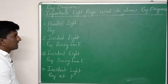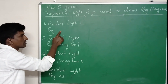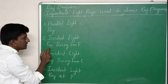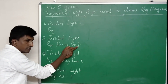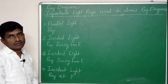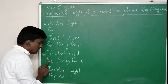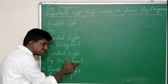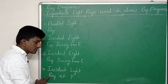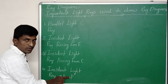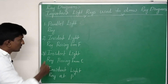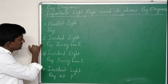The first important light ray is the one coming from the object parallel to the principal axis. The second is the incident light ray passing through the focal point F. The third is the incident light ray passing through the center of curvature C. The fourth is the incident light ray which strikes the pole P of the mirror.